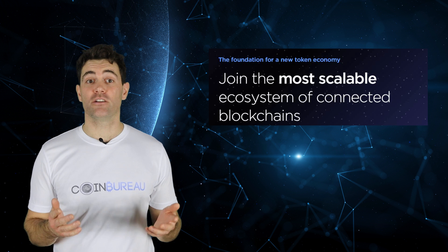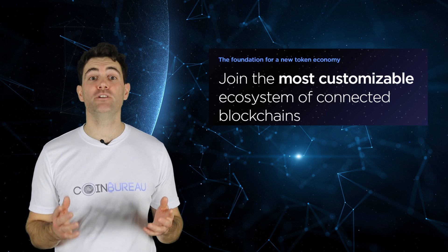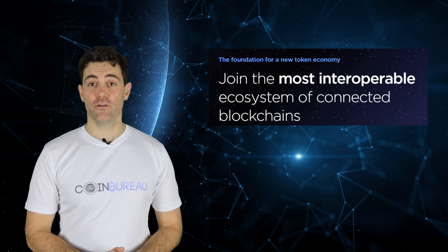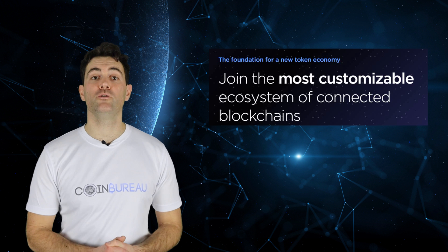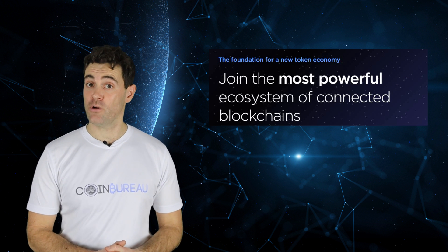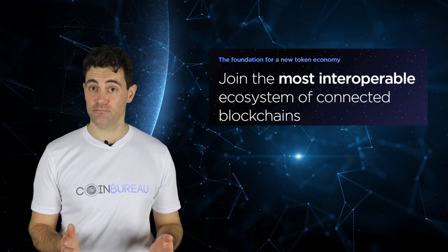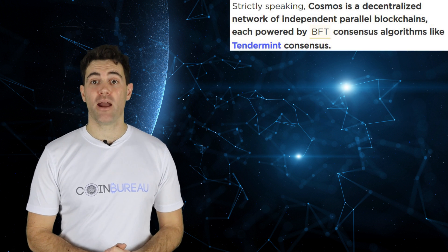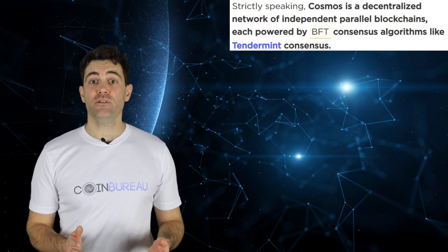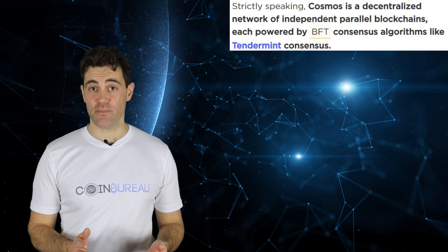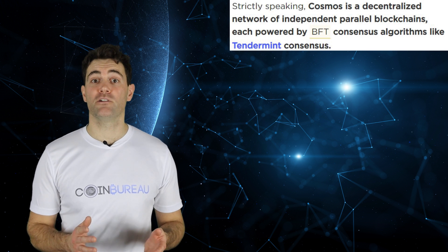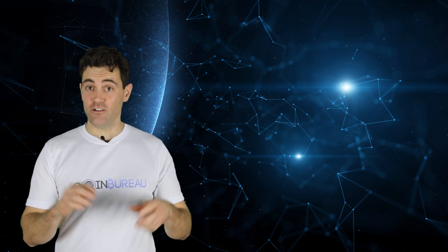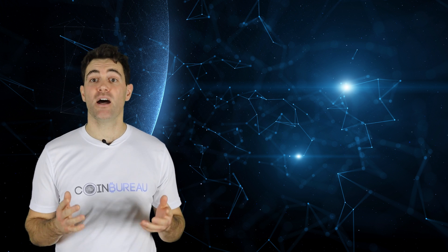If you've been paying attention to the crypto space for the past year, you'll no doubt have come across Cosmos and the Atom currency. The overarching goal of this project is to be the connecting fibre between all the isolated blockchains — blockchain interoperability. The project markets itself as an independent, decentralised network of parallel blockchains, powered by Tendermint, a Byzantine fault-tolerant consensus mechanism. The project refers to its network as the Cosmos hub.